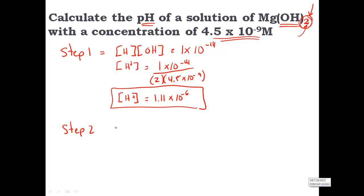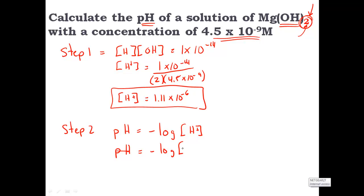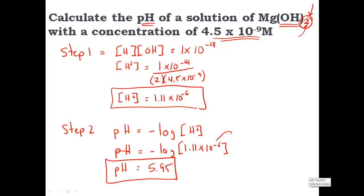Step 2: we use the pH formula. pH equals the negative log of the H⁺ ion. Plugging in our values, we find the pH is equal to 5.95 — and once again, that's in the ballpark of that exponent.